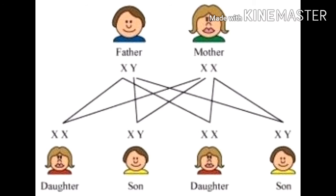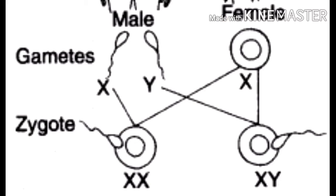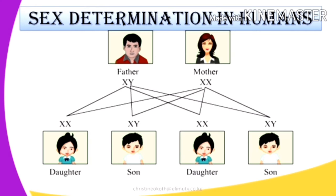The sex of a child to be born is determined at the time of fertilization. In females, all the eggs produced have only one X chromosome.